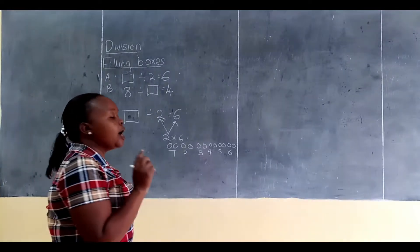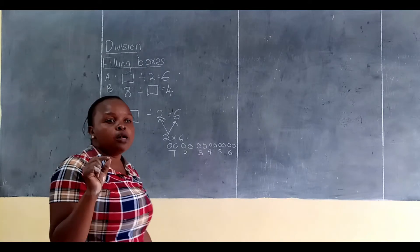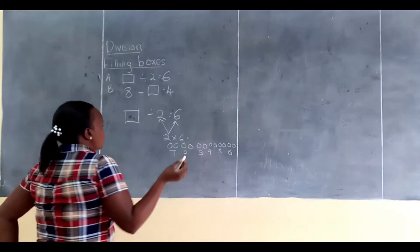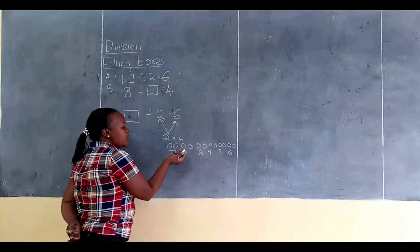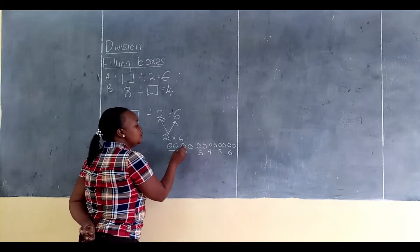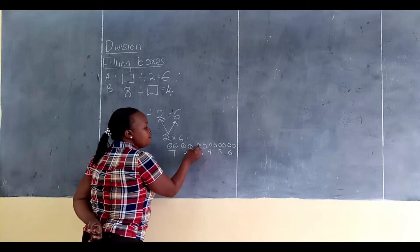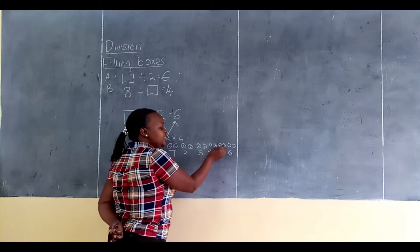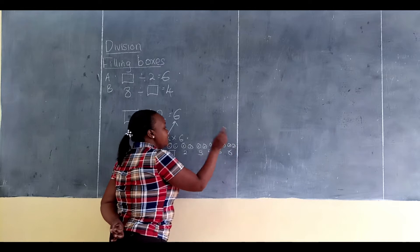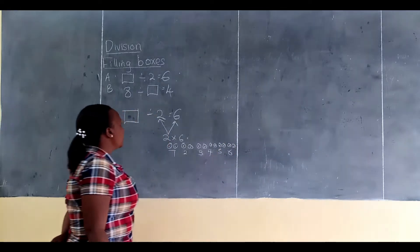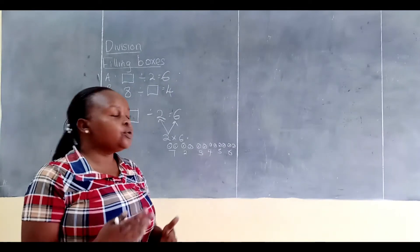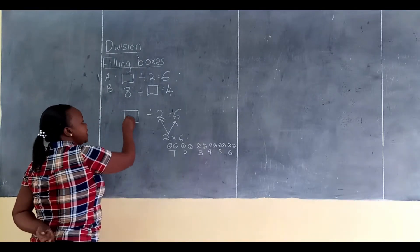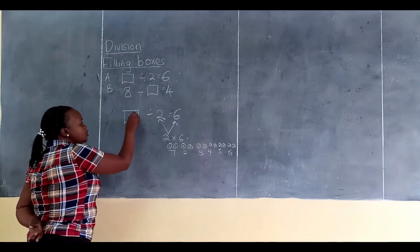Now it is time to count all the balls so that we can come up with the answer. So let's count together: 1, 2, 3, 4, 5, 6, 7, 8, 9, 10, 11, 12. So we have gotten 12. That 12 is the missing number in the box. So our answer here is going to be 12.